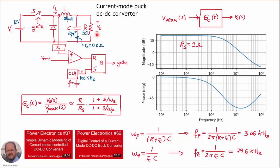We have studied this converter in previous videos: Power Electronics number 37 and Power Electronics number 66. Here we have the control circuit — we measure the current through the inductor with a sensor which has a gain Rs, compare it with a peak reference, and then use an RS flip-flop to generate the gate signal for the switch.